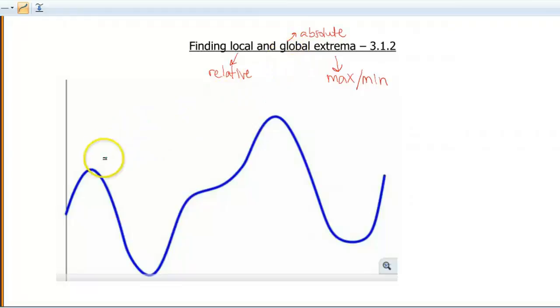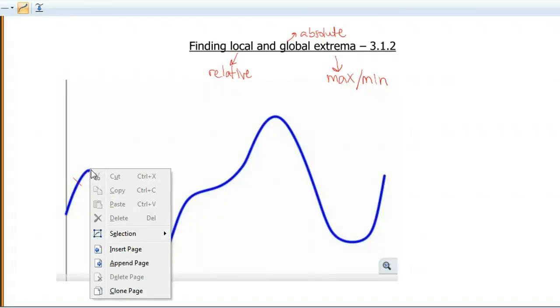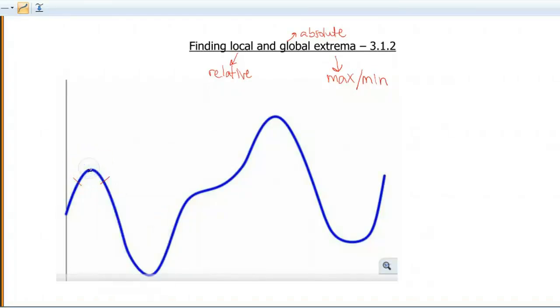So as we're looking at the graph, the graph is increasing here and then it hits a peak right up here. So if we take a neighborhood around that peak, hopefully you agree that this point right here is definitely the highest point of that peak. That's the highest point of that peak, so this is a local maximum. Because as you look at points around that point, that's definitely the highest of all of them.